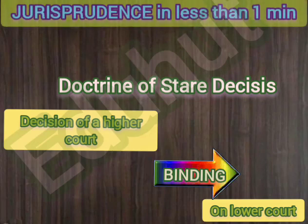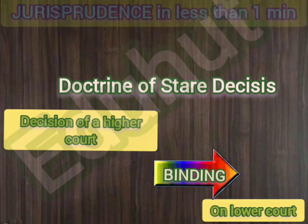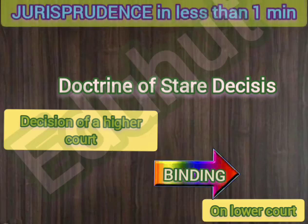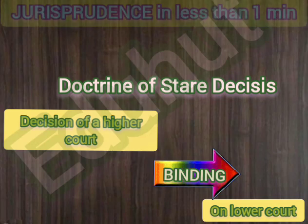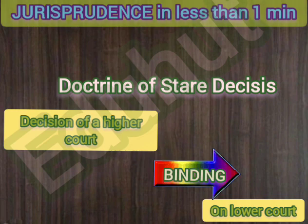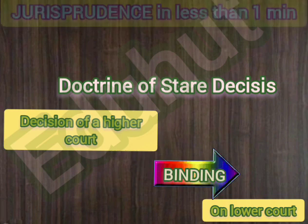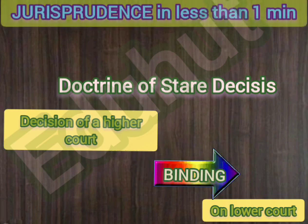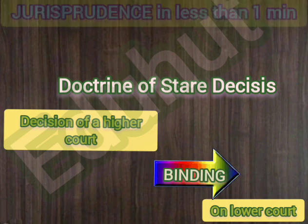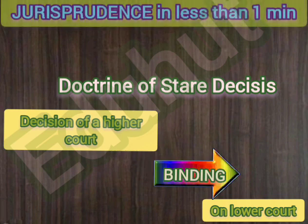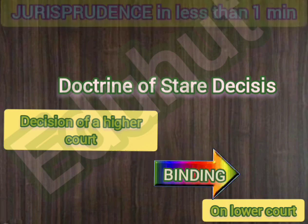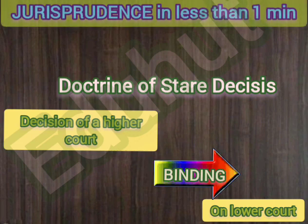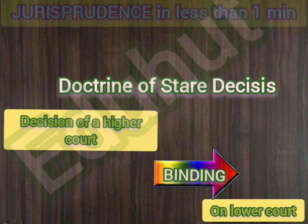Hello everyone. In today's class we will learn about the doctrine of stare decisis. This doctrine states that the decisions of a higher court are to be followed by all lower courts.